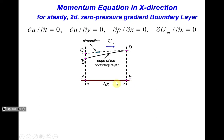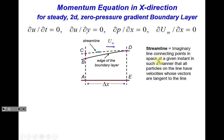The control volume is bounded by the plate itself as the lower border, two vertical planes AC and ED separated by small distance δx, and a streamline that crosses the point where vertical plane ED meets the upper edge of the boundary layer. A streamline is an imaginary line where velocity at any point is tangential to it — meaning velocity orthogonal to the streamline equals zero. Therefore, no mass or momentum is exchanged across this upper boundary, which is why we chose it.